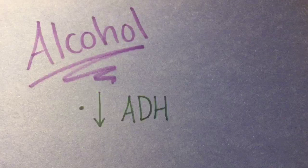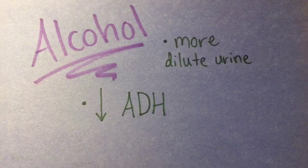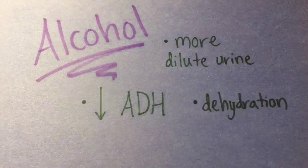Alcohol affects the way ADH functions. It causes less ADH to be made, leading to the production of more dilute urine and dehydration.